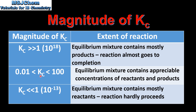If the value for Kc lies between 0.01 and 100, the equilibrium mixture contains appreciable concentrations of both reactants and products. And if the value of Kc is very small, for example 10 to the power of negative 13, the equilibrium mixture will contain mostly reactants — the reaction hardly proceeds.